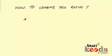In this question, the first ratio is A is to B, the terms of which are 6 is to 5. The second ratio is B is to C.